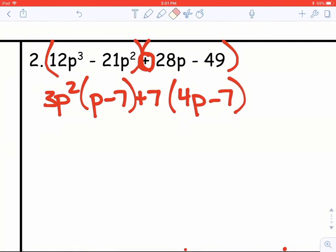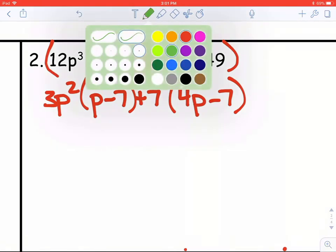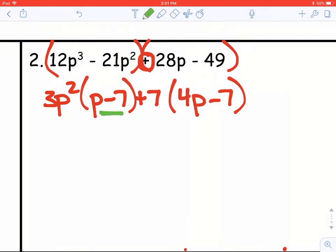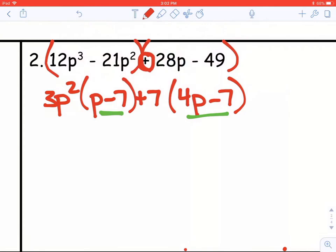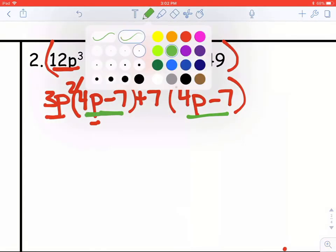And now these factors are supposed to match. Notice I have p minus 7 and 4p minus 7, so something has to be wrong somewhere. So let me double check that I did the math right. So 3p squared times p, that would not give me 12p cubed. So what happened there is I missed a 4. So let's go back and put in a 4 because like I say, those factors should always be matching.